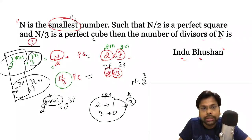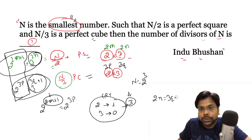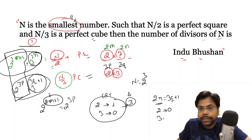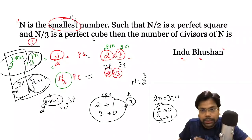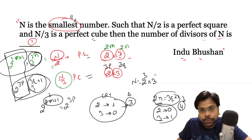Now we work on the power for base 3. We have 3^(2n) and 3^(3q+1), so 2n equals 3q+1. This means the power of 3 must leave remainder 0 when divided by 2, and remainder 1 when divided by 3 — again by the Chinese Remainder Theorem. The least such number is 4: divided by 2 remainder is 0, divided by 3 remainder is 1. So n contains 3 raised to the power 4.